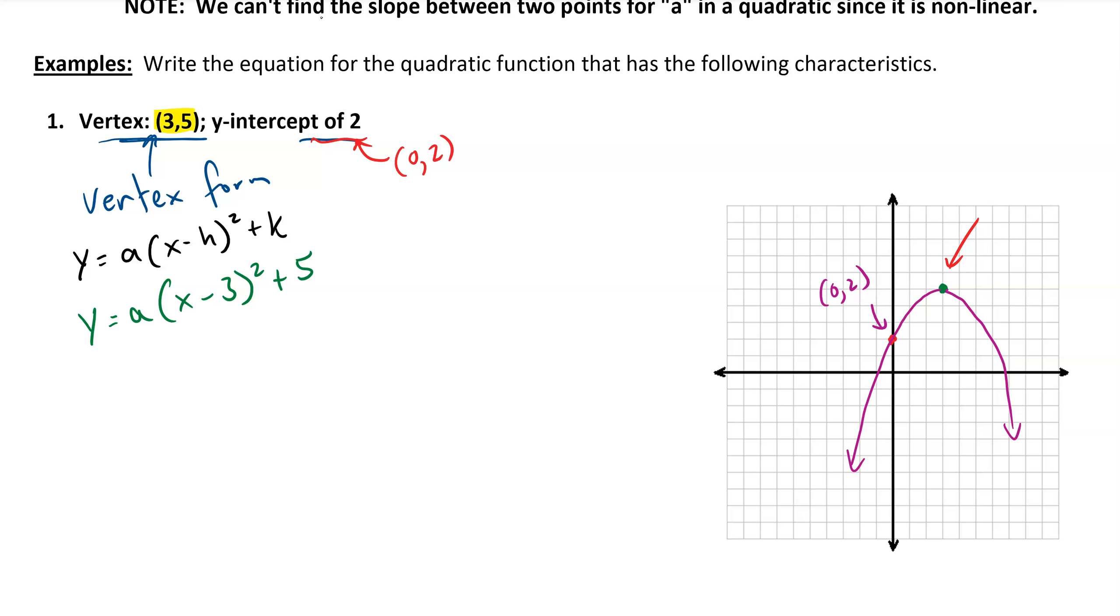To find out specifically what the a value is, we can use the coordinates of this point. So (0, 2) means that if I plug in 0 for x into my formula, the y value should equal 2. And solving this equation allows us to find the value of a. So subtracting 5 and also squaring this value gives me -3 equals 9a, and then a has to equal -3/9, or more simply, -1/3.